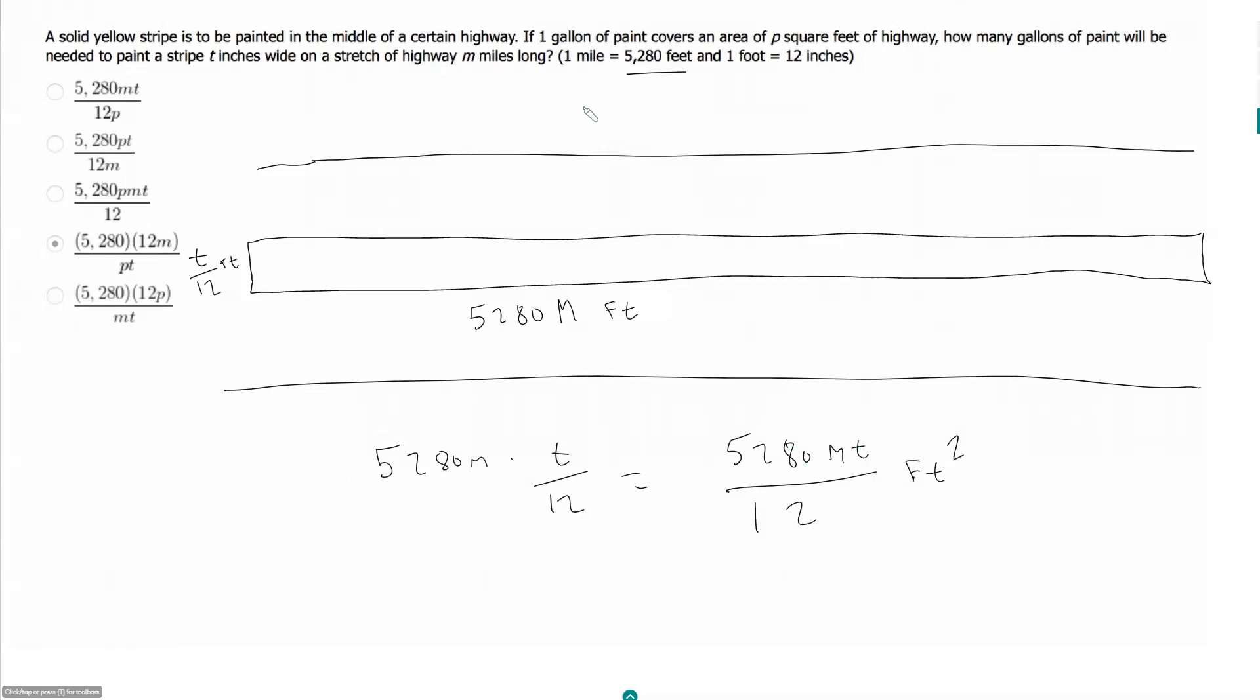And then what do I know? I want the number of gallons of paint needed to cover that amount. And so one gallon covers p square feet. So if I want just gallons, I need to put square feet in my denominator, covers p feet squared. And so my final answer should just be 5,280 mt all over 12 p.